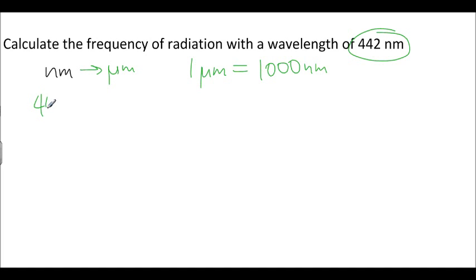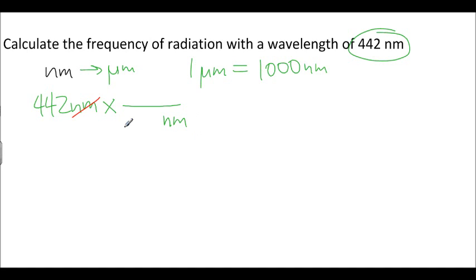We start with 442 nanometers. When converting units, I always treat it as multiplying by fractions. I don't want nanometers, so for them to divide out, nanometers must appear at the bottom of my fraction, and they cancel out. We're converting nanometers into micrometers. The bigger unit is micrometers, so we put 1 next to micrometers: in 1 micrometer there are 1,000 nanometers.